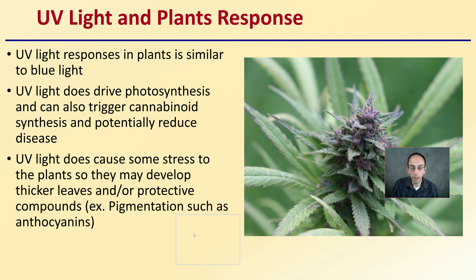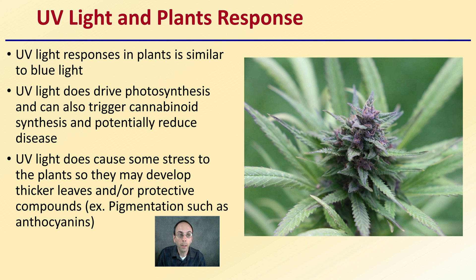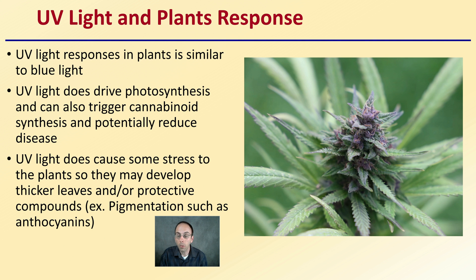UV light response in plants is similar to blue light — UV does not drive photosynthesis and can trigger cannabinoid synthesis and potentially reduce disease. UV light does cause some stress to the plants, so they may develop thicker leaves and protective compounds, such as pigmentation like anthocyanins, that purple coloration. Some plants produce this naturally, but it is usually a response to some sort of stress, in this case potentially light stress from UV light.